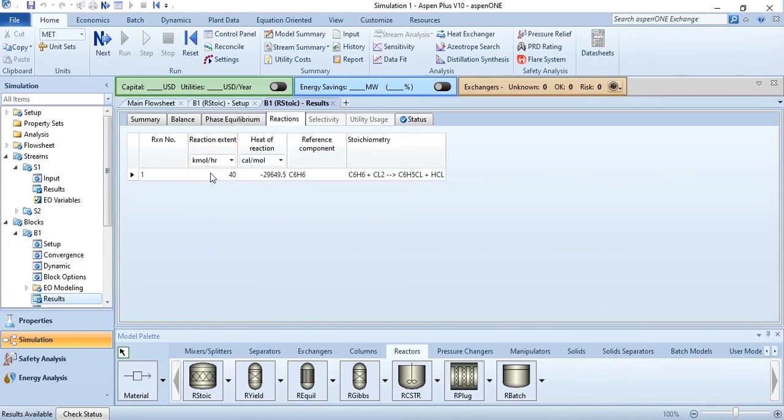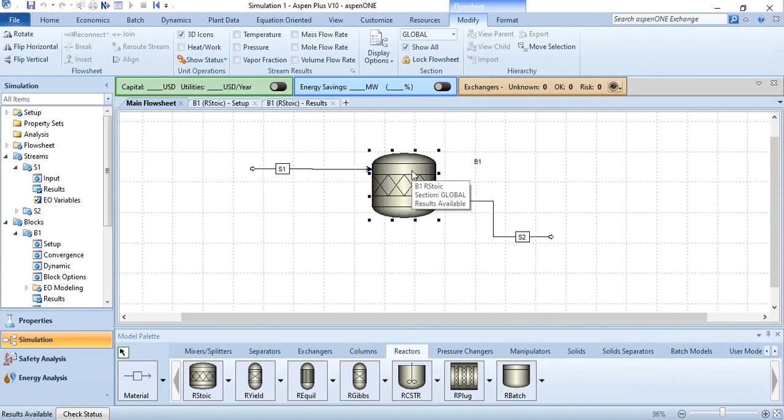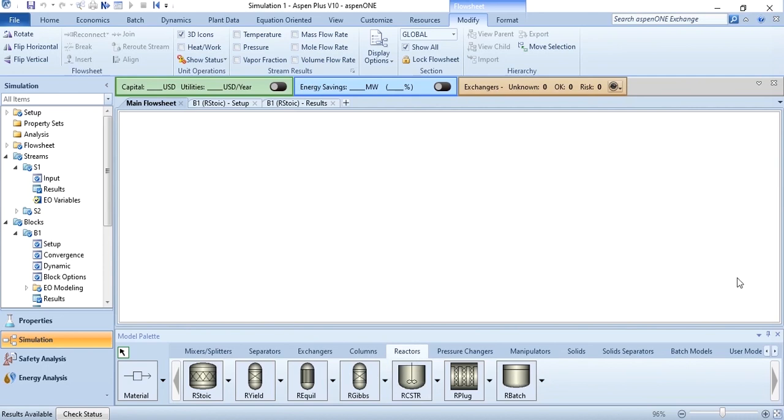Then in reactions you can see that the extent of reaction is 40, the heat of reaction in calories per mole is this value, and the reference component is this. Now basically the second part of it where we needed the heat of reaction, and in the first part you needed the outlet flow rate.